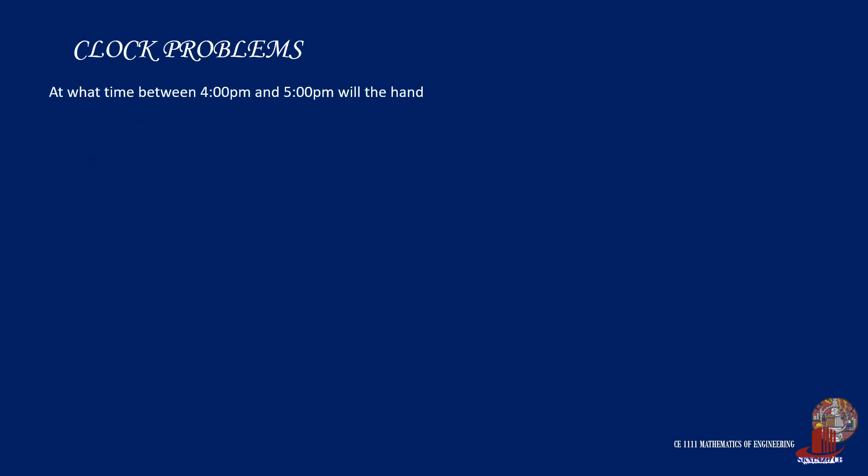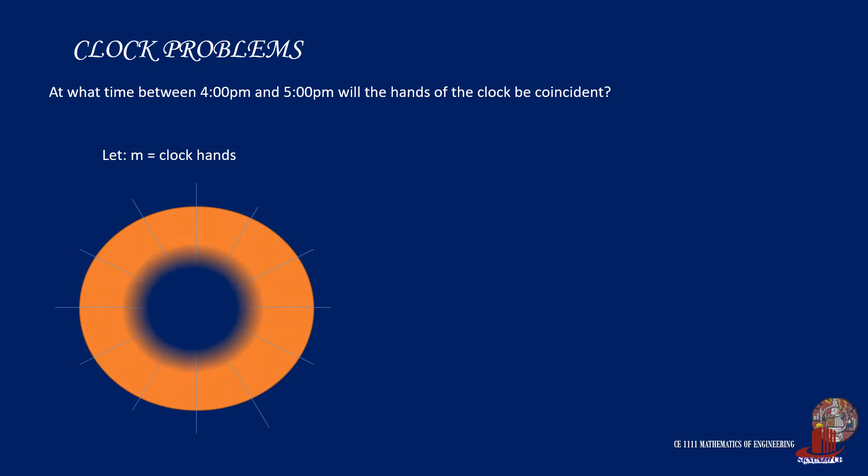Take the first example. At what time between 4pm and 5pm will the hands of the clock be coincident? Let's use the first set of analogy in this example. Using the formula m equals initial minute plus m all over 12.